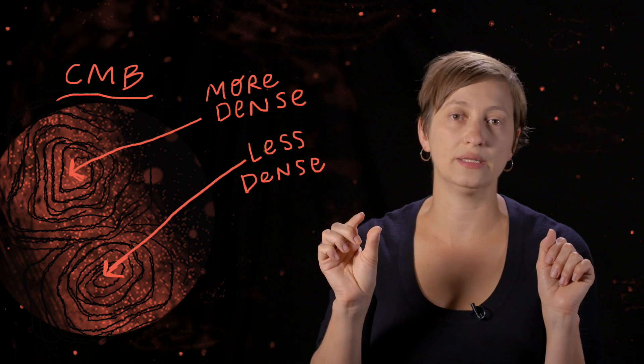That temperature tells us about how dense the universe was, and we can measure small fluctuations in that temperature, which tells us about places where the universe was a little bit more dense or a little bit less dense.